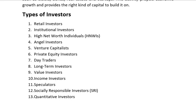Second is institutional investors. Institutional traders are agencies that pour large sums of money into investments. This category includes pension funds, insurance companies, mutual funds, hedge funds, and endowments. Institutional traders often have enormous financial sources and may affect marketplace dynamics.